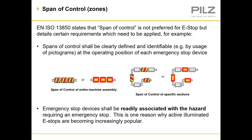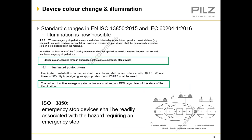This is one reason why actively illuminated emergency stops are becoming increasingly popular. Standard changes in EN ISO 13850 and IEC 60204 mean that illumination is now possible. Section 4.3.8 of standard EN 13850 covers when emergency stop devices are installed on detachable or cableless operator control systems — for example, pluggable, portable or teaching pendants. At least one emergency stop device shall be permanently available in a fixed position on the machine.